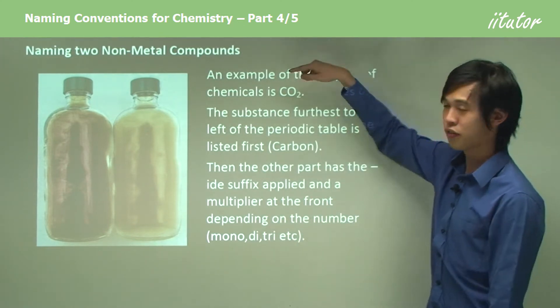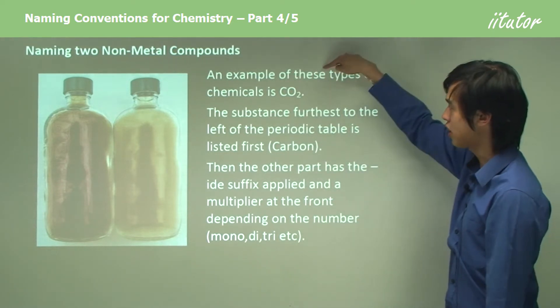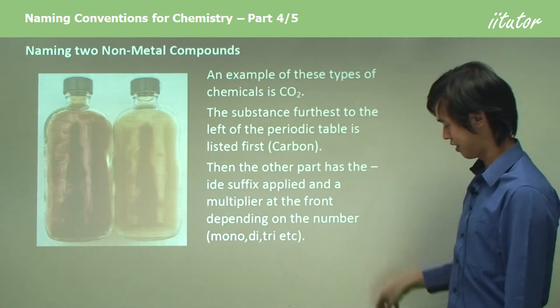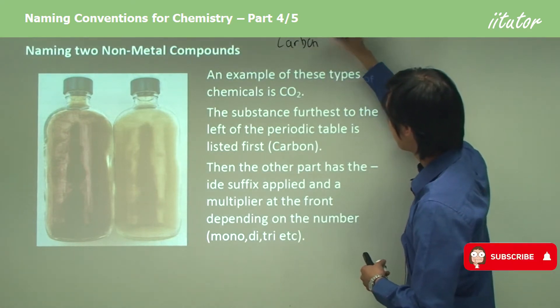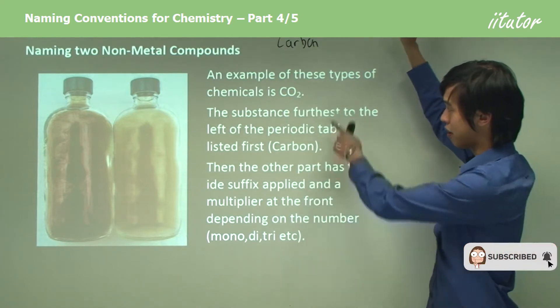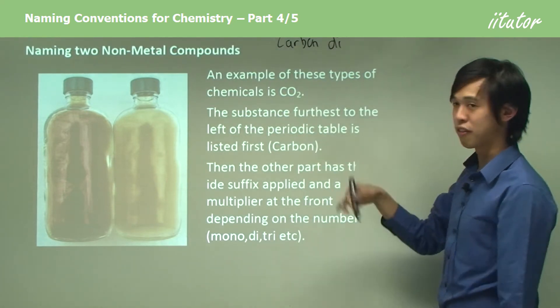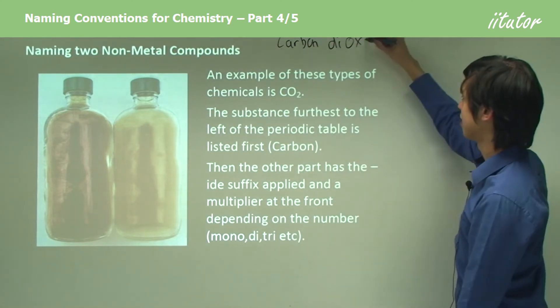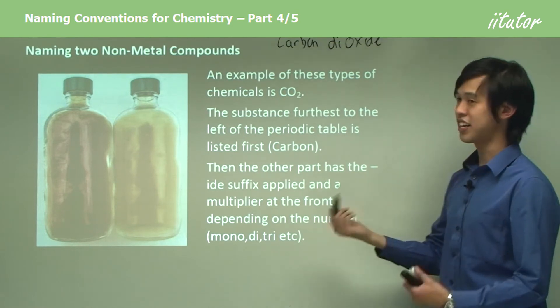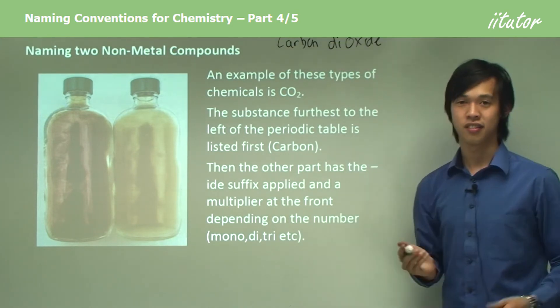So two of them means di, so it's carbon, di, ox, ide. Carbon is the first thing that we write. Then we put the number of the other element, which is di, then we put the first syllable of the other element, which is ox, and then we add ide. And now we have the final chemical that we're all familiar with, carbon dioxide.